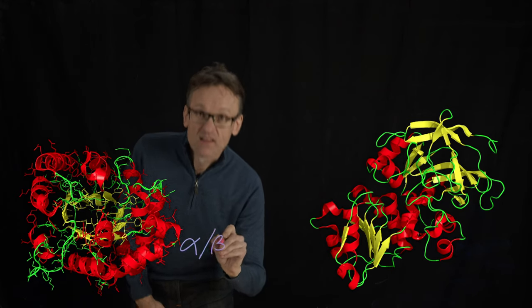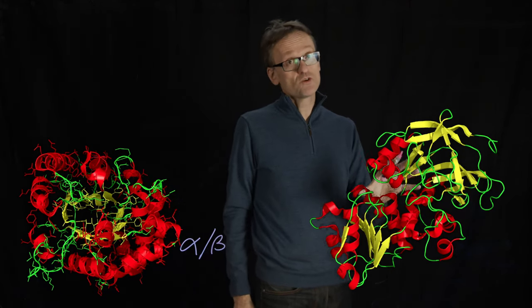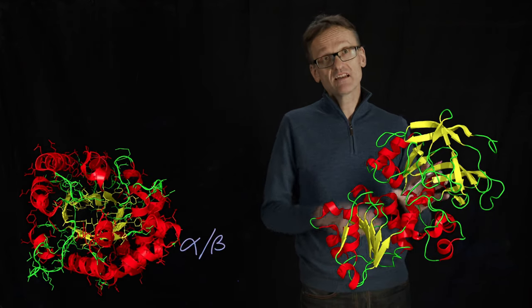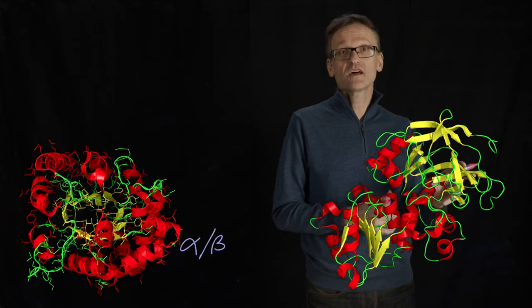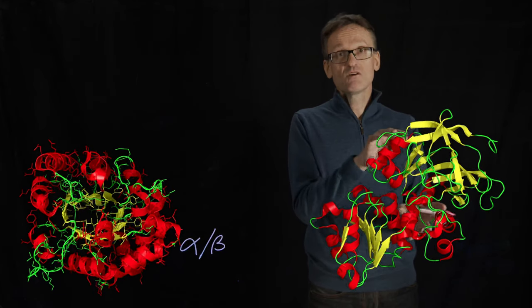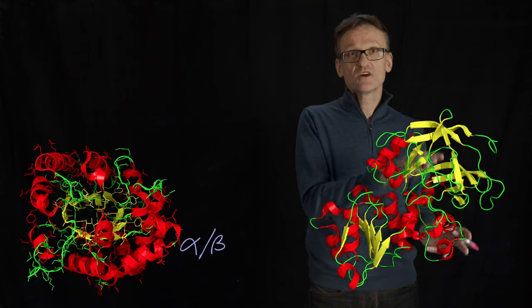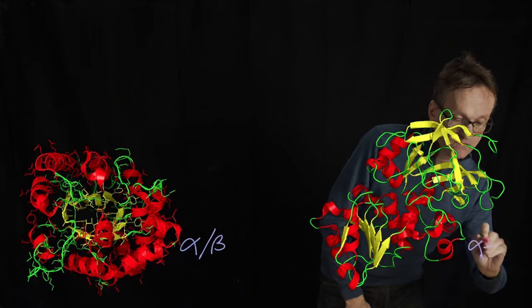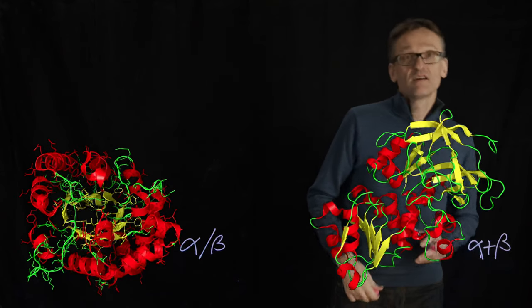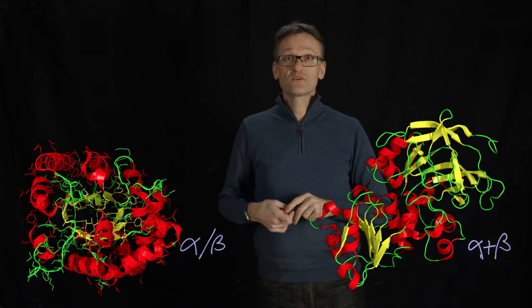This structure is also helix and sheet, but at least up here. So here we actually have a region that's alternating, but up here I have a separate beta sheet region while this is an alpha helical region. So at least this part of the protein you could call alpha plus beta. Sorry about the nomenclature—that's not our strongest side in this field.